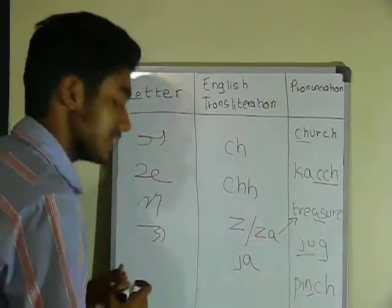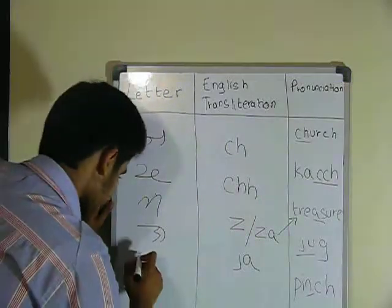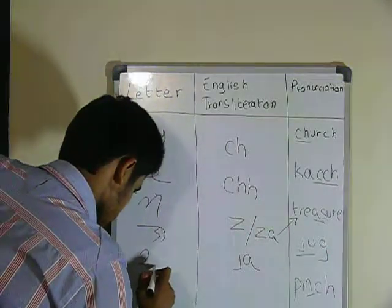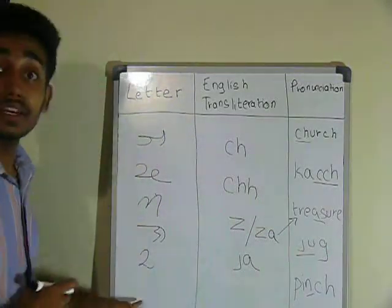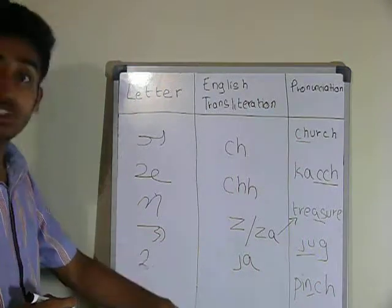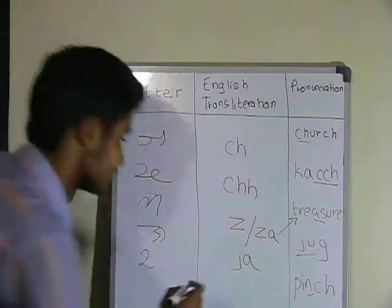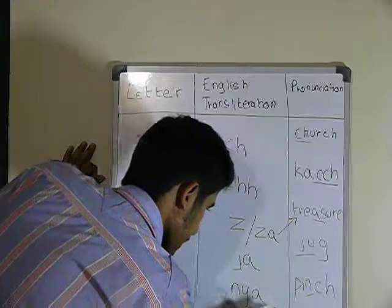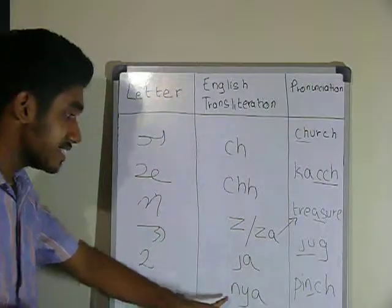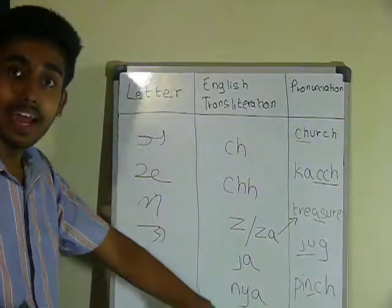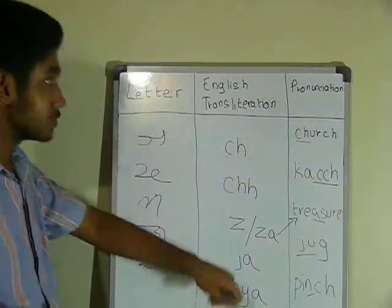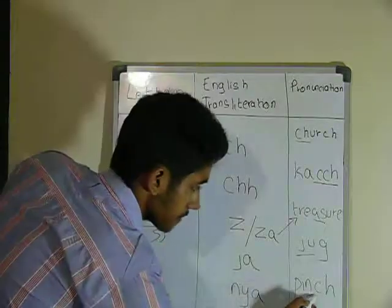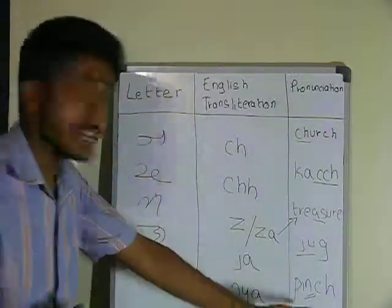The next letter is N. Its English transliteration is N, Y, and A. Its pronunciation is same as J.